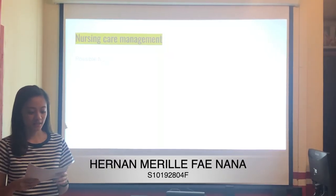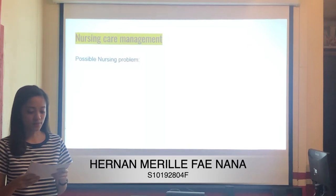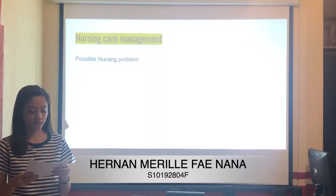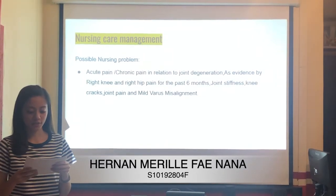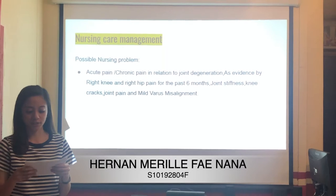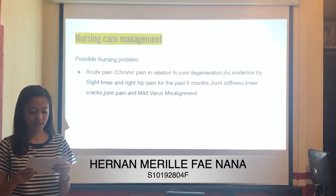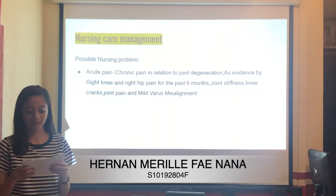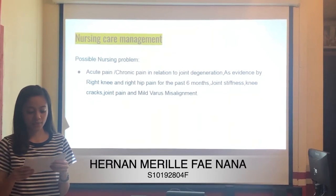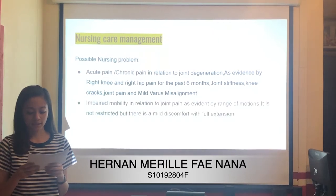For nursing care management, the possible nursing problems are: first, acute and chronic pain in relation to joint degeneration, as evidenced by right knee and right hip pain for the past 6 months, joint stiffness, knee pain, and mild varus misalignment — which is an excessive inward or outward angulation.